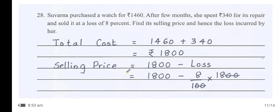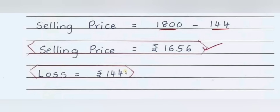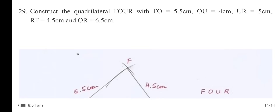Varna purchased a watch for ₹1460; after a few months she spent ₹340 for its repair and sold it at a loss of 8%. Find the selling price and the loss. Total cost = 1460 + 340 = ₹1800. Selling price = 1800 − (8/100 × 1800) = ₹1656. Loss = ₹144.